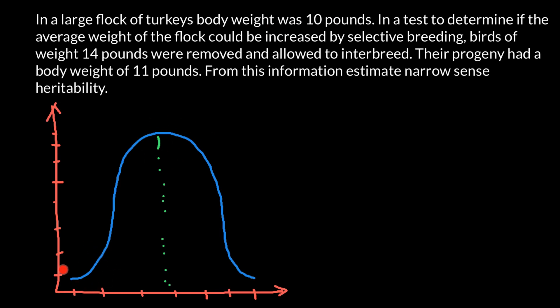The frequency of occurrence is highest near the mean. We see very few animals that are very small with low body weight, and very few that are very large with the highest body weight. Most are very close to the mean. We were told that the average was 10 pounds, so we put 10 pounds as the mean of this base population.